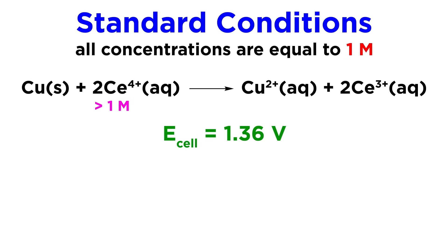But what if the cerium 4 plus concentration is greater than 1 molar? Well let's recall what we know about Le Chatelier's principle. If we increase the concentration of a reactant, that will push things in the forward direction to use up the excess reactant. As a result, the cell potential must increase.